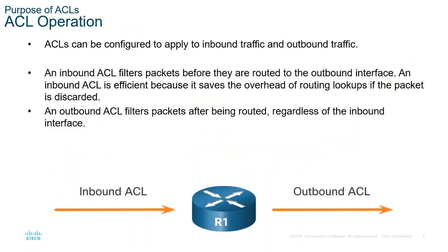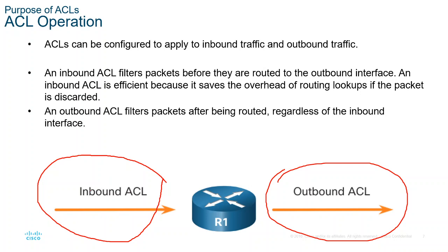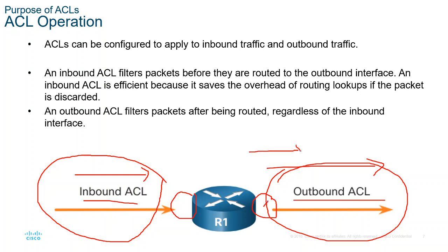For ACL operations, a router has an inbound interface and an outbound interface. Inbound means incoming traffic — traffic entering the router. Outbound means outgoing traffic — traffic leaving the router. When implementing an access list, we need to know which interface to configure — inbound or outbound.